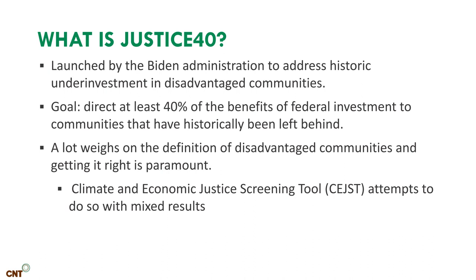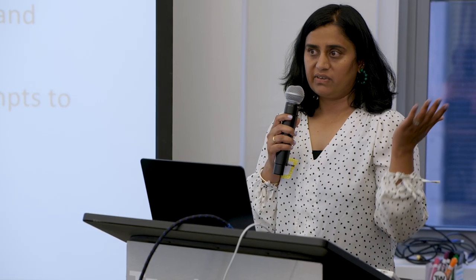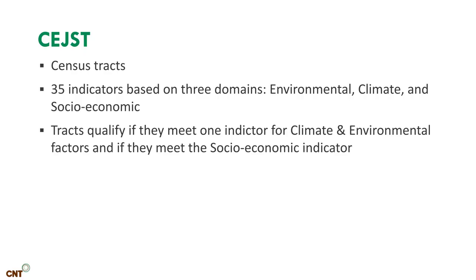To do that, the federal government launched the CGIS tool — the Climate and Economic Justice Screening Tool. We reviewed it and had mixed feelings about it. The tool qualifies census tracts based on 35 indicators across climate, environmental, and socioeconomic domains into disadvantaged communities. You qualify if you meet one of the climate and environmental factors and the socioeconomic factor. We reviewed and analyzed the data and had some critiques.